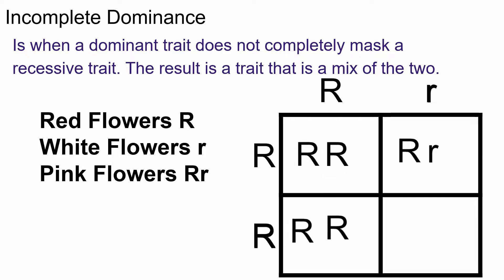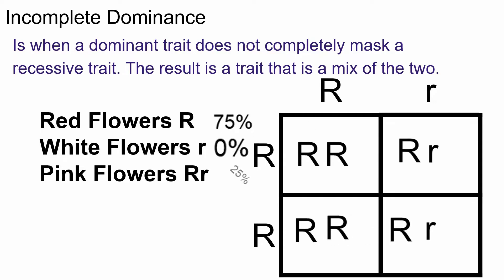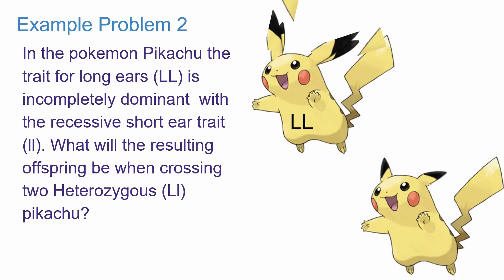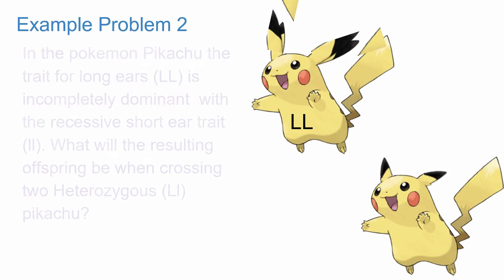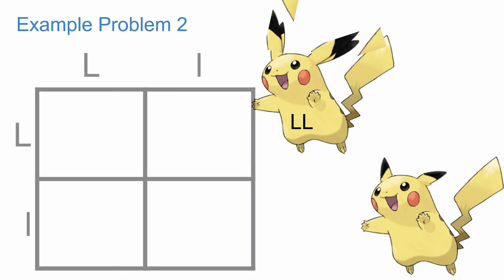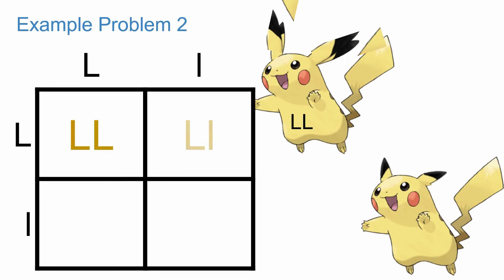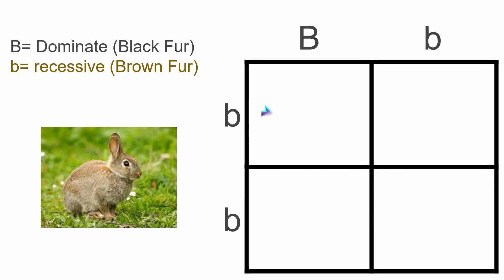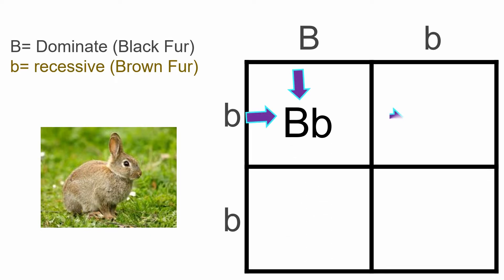Dominant genes, they're the ones in charge — they show up every time, they are large. But recessive genes, they're hiding in the back; they need two copies to show up, it's a fact. So let's fill up the square to predict the fate, use a Punnett square to determine the traits.